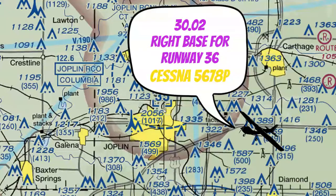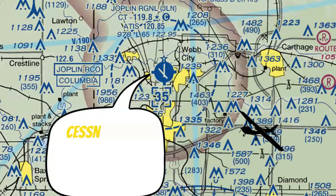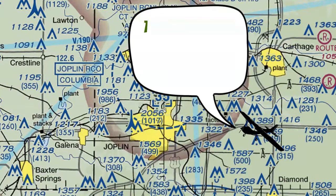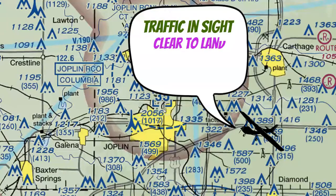All they need to hear is the basic information — all the numbers and your call sign. ATC then comes back: "Cessna 5678 Papa, Joplin Tower. You're number two, following a Piper Cub on one mile final. Cleared to land runway 36." Now I'm cleared to land, but there's somebody in front of me. We need to find that traffic and let the tower know when we see him, and repeat our landing clearance back. "Traffic in sight, cleared to land runway 36, Cessna 5678 Papa."